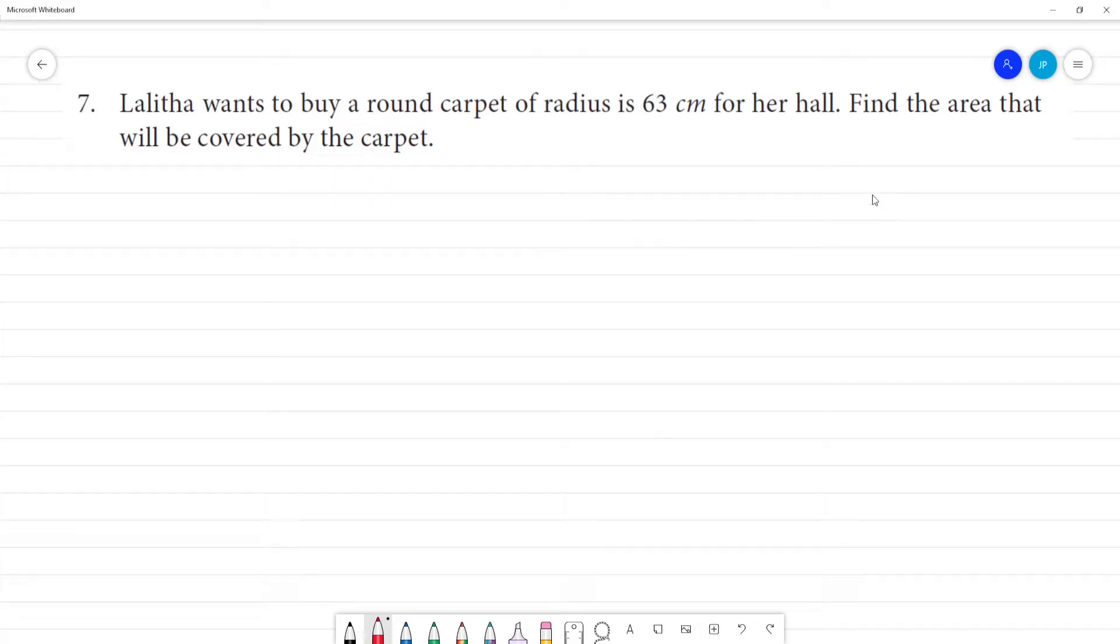Lalitha wants to buy a round carpet of radius 63 cm. Round carpet of radius 63 cm. Find the area. Radius is equal to 63 cm. What is area?